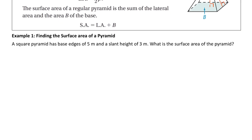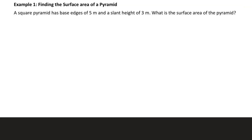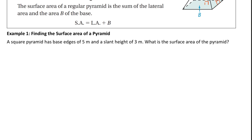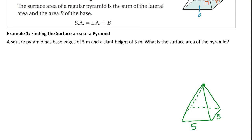If we have a square pyramid with base edges of five meters and a slant height of three meters, we want to find the surface area. We draw the pyramid with a flat parallelogram base where two sides are dotted, and connect the vertex above it. It's a square base with edges of five meters, and the slant height — the distance from the vertex to an edge — is three meters. This is not to scale.